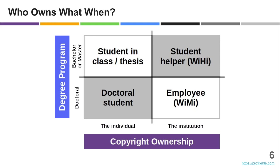And usually you don't want that. You want the university — and you as an agent of the university (I'm talking to professors and researchers who are deciding to open source) — you want the institution to own all the rights, because then you can simply, on behalf of the institution or with its agreement, open source and you don't need everyone's permission.